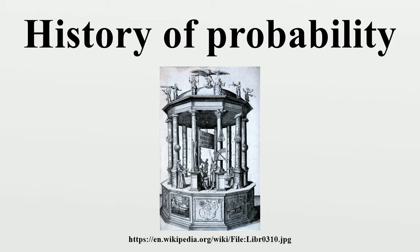In the 18th century, Jacob Bernoulli's Ars Conjectandi and Abraham de Moivre's The Doctrine of Chances put probability on a sound mathematical footing, showing how to calculate a wide range of complex probabilities. Bernoulli proved a version of the fundamental law of large numbers, which states that in a large number of trials, the average of the outcomes is likely to be very close to the expected value — for example, in 1,000 throws of a fair coin, it is likely that there are close to 500 heads.